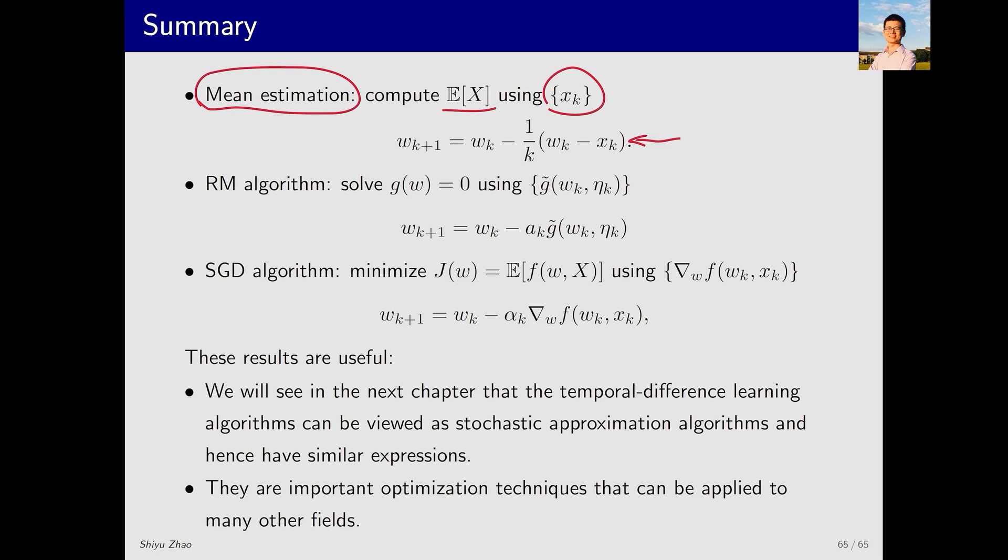In the second part, we introduced a classic algorithm in the field of stochastic approximation, known as the Robbins-Monroe algorithm. This algorithm can find the root W* of the equation G(W) = 0, where the expression of G(W) is unknown. What we know is that for a given W, we can measure the function value subject to noise or errors, represented by G tilde. The RM algorithm can be used to estimate W* using these noisy measurements.